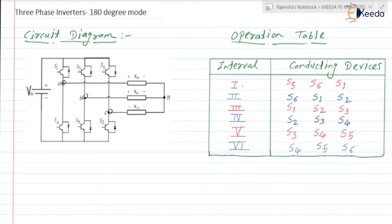The operation table consists of six intervals — interval one through interval six. Each interval is of 60 degrees, so 60 times 6 equals 360 degrees, which represents one complete cycle of the alternating waveform. After completing interval six, it cycles back to interval one and continues repeating.